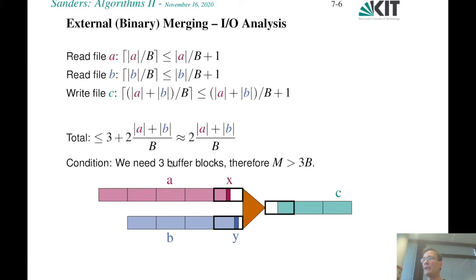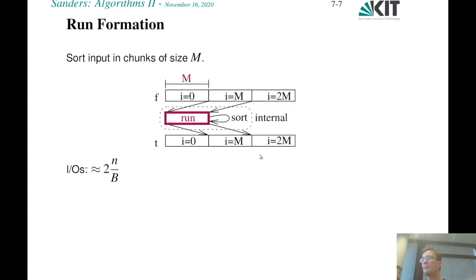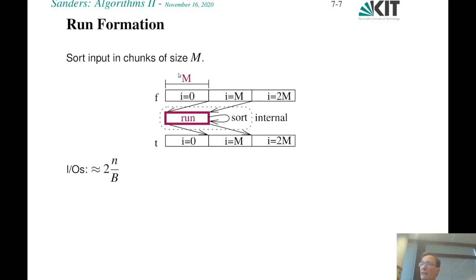To build a full sorting algorithm, we use an additional component called run formation as a base case. We load chunks of data of size approximately M into fast memory, sort internally, and write out. This gives a first run, second run, third run, and so on, reading and writing all data once for 2N/B IOs. We then build a binary merge sort by first performing run formation, then iteratively merging pairs of runs until only one run remains.